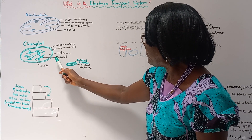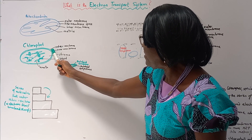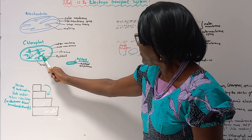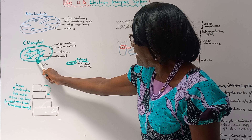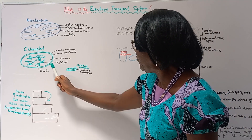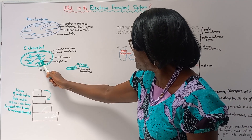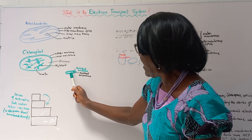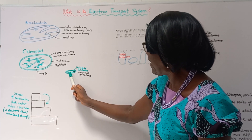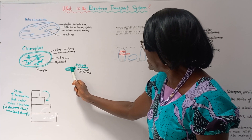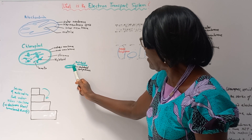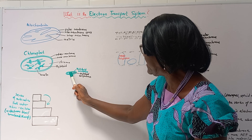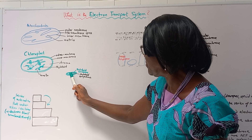Chloroplast structure: we have an outer membrane, inner membrane, stroma, thylakoid, and lamella. The thylakoid consists of fluid-filled sacs and flattened sacs. I have one thylakoid drawn here — this is the membrane of the thylakoid and there is a thylakoid compartment filled with fluid.